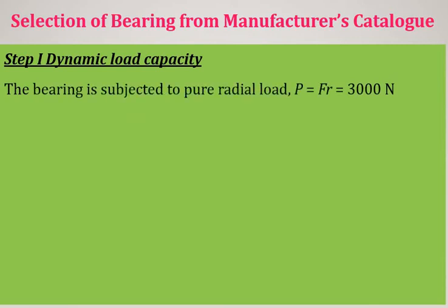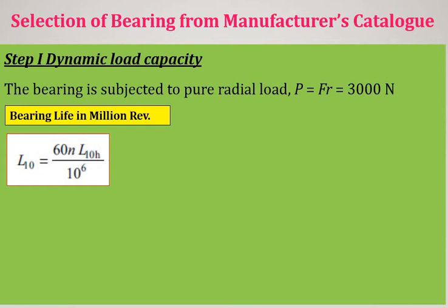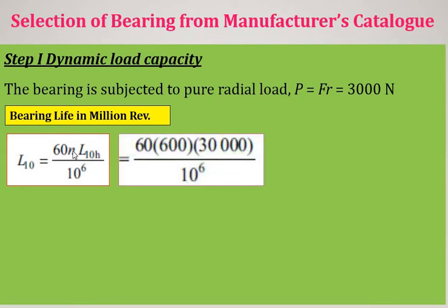Since the bearing is subjected to pure radial load, there is no axial force FA. Therefore X = 1, Y = 0, and P = FR = 3000 N. Next, we convert bearing life from hours to million revolutions: L10 = 60 × N × L10H / 10^6 = 60 × 600 × 30000 / 10^6 = 1080 million revolutions.